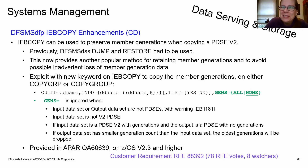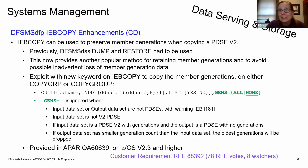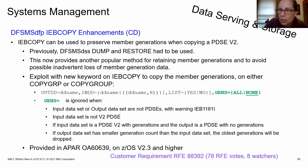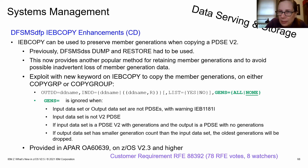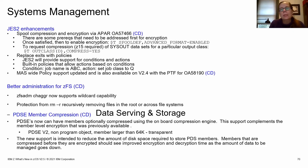IEBCOPY PDSE Version 2 generation support was a very top customer RFE with 68 votes and 8 watches. When using PDSE version 2 member generations, you can now use IEBCOPY to preserve those generations — previously you had to use DSS dump and restore. This was popular enough to roll back all the way to z/OS 2.3. Use the GENS keyword — GENS=ALL for COPY or COPYGRP. The default preserves existing behavior of copying only the current generation.